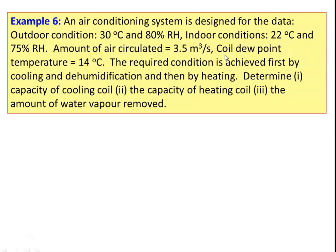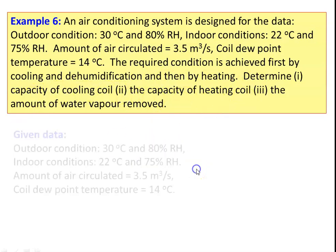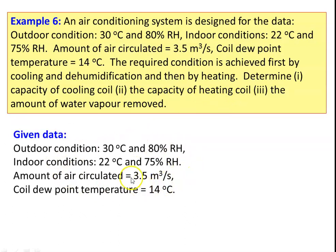A refrigeration system is used for cooling and dehumidification where the coil surface dew point temperature is 14 degree Celsius. The required condition is achieved first by cooling and dehumidification, then by heating. Determine the capacity of the cooling coil, capacity of the heating coil, and amount of water vapor removed.